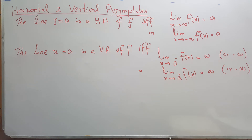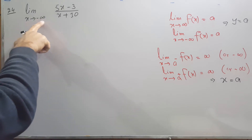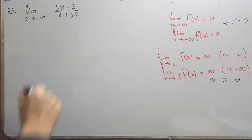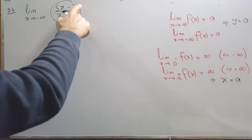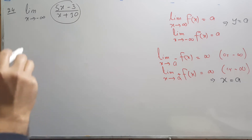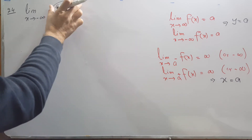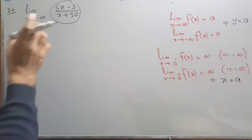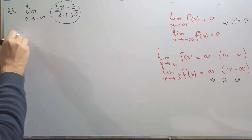When dealing with problems where x approaches infinity or minus infinity and you have a rational function, what you have to do is look at the numerator and denominator and simplify by keeping only the term with the highest power of x in the numerator and the term with the highest power of x in the denominator.